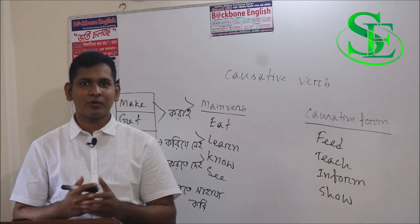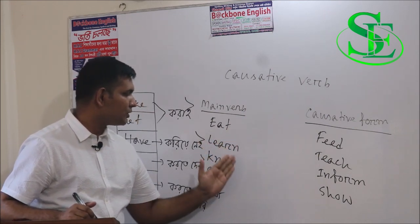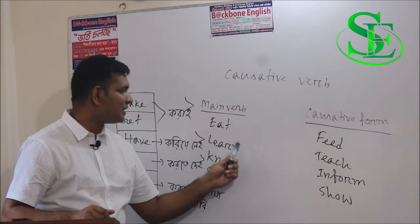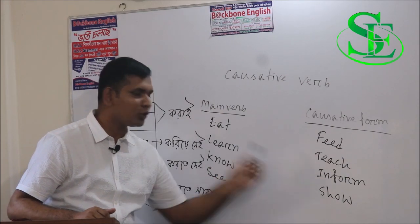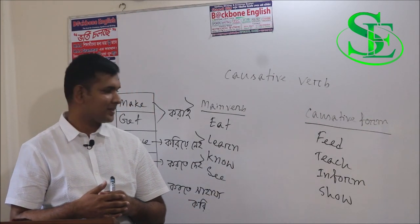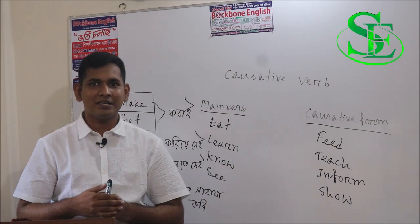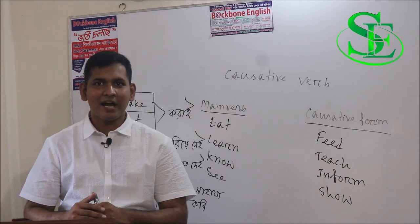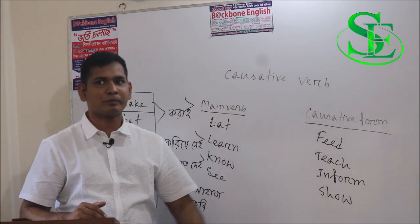In English, some verbs have natural causative forms: eat→feed, learn→teach, know→inform, see→show. For example: 'I eat rice' / 'I feed rice'; 'I learn English' / 'I teach English'; 'I know it' / 'I inform it'; 'I see a bird' / 'I show him a bird.' For these kinds of verbs that have causative forms, we use those causative forms directly.